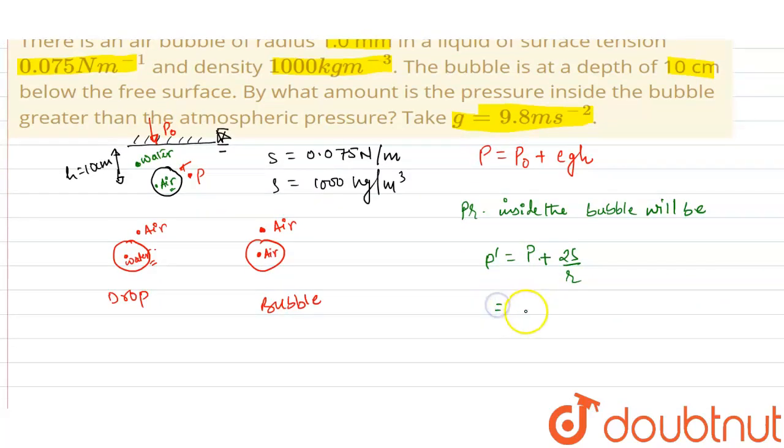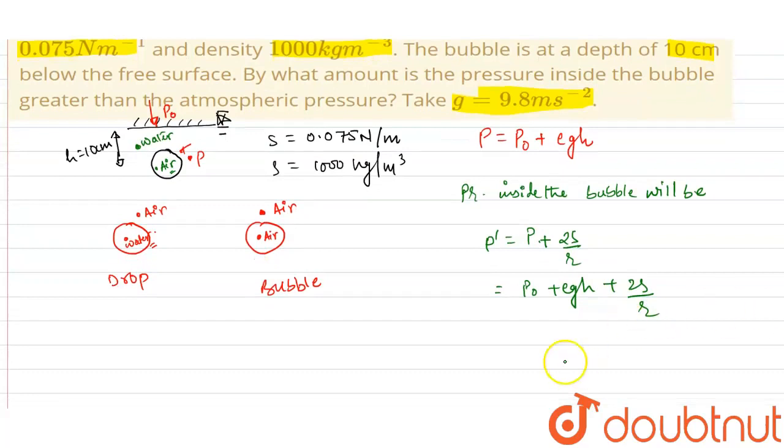Now putting the value of P: P' = P₀ + ρgh + 2S/r. We have to calculate by how much the pressure inside the bubble is greater than atmospheric pressure. So P' - P₀ = ρgh + 2S/r.